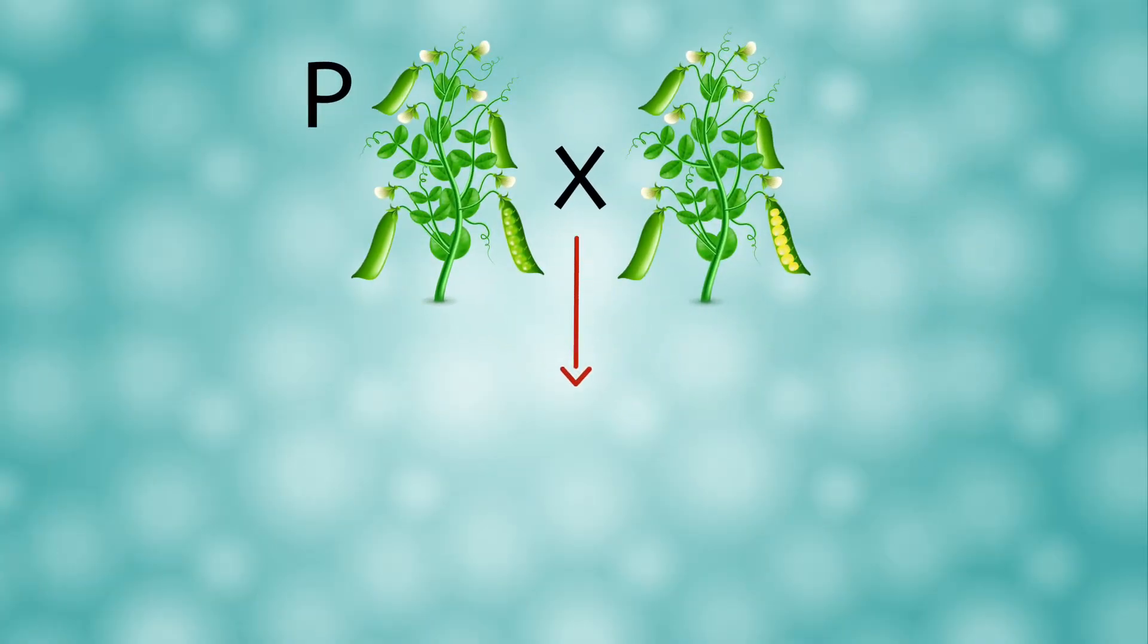Mendel expected to get a mixture of both yellow and green seed plants from this cross, but he was surprised. All of the offspring plants had yellow seeds, not a single green seed in the bunch. This generation would be called the first filial or just F1 generation.